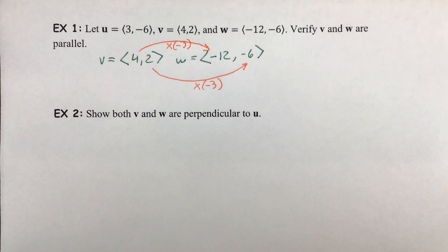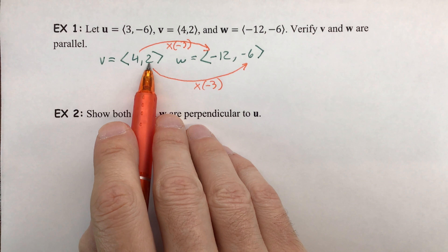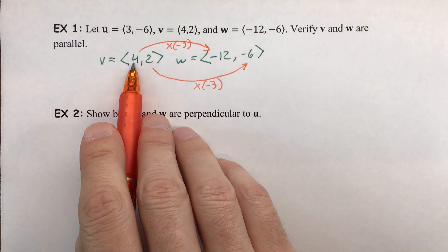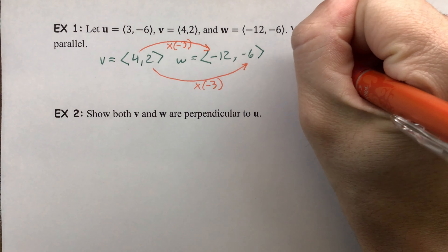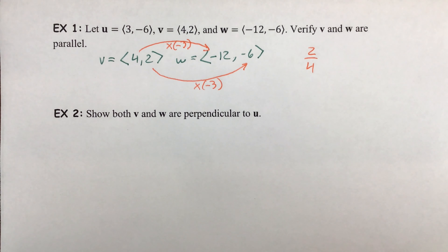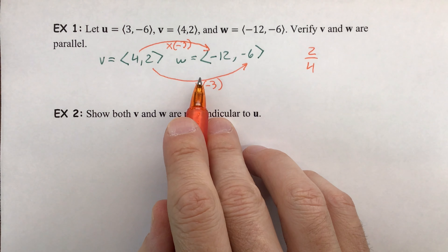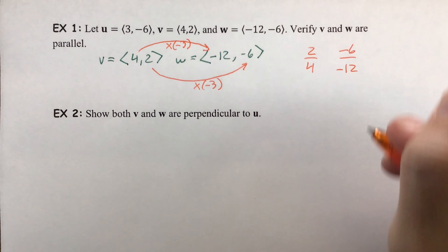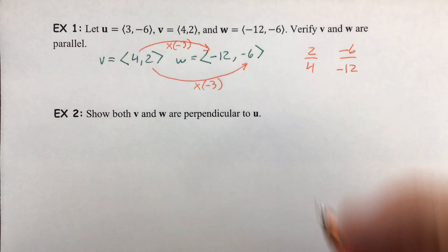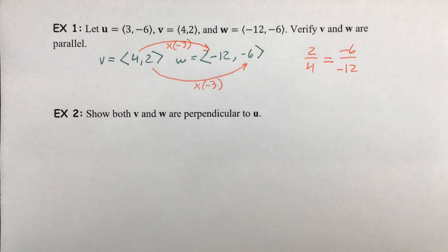The second method we could use is to treat them like slopes, because component form is essentially a slope. Vector v moves right 4 and up 2, so its slope is 2 over 4, which is the same as one half. The slope of vector w is -6 over -12, which is also one half. Being that those are equal to each other, you have the same direction, which means they run in parallel lines.